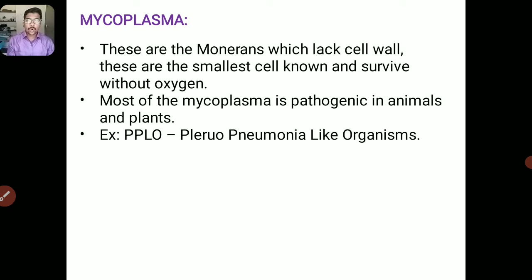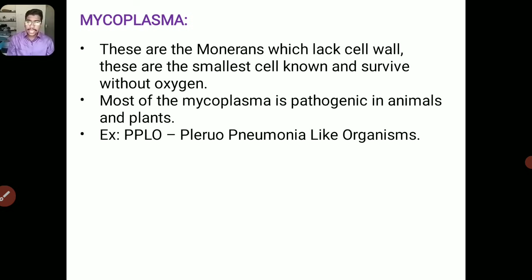Next is Mycoplasma — this is one of the topics in this chapter. Mycoplasma is pathogenic in animals and plants. They may cause diseases in plants and animals. Example: Pleuro Pneumonial-Like Organism (PPLO). The Mycoplasma is the smallest cell, and it can survive without oxygen. They lack a cell wall.